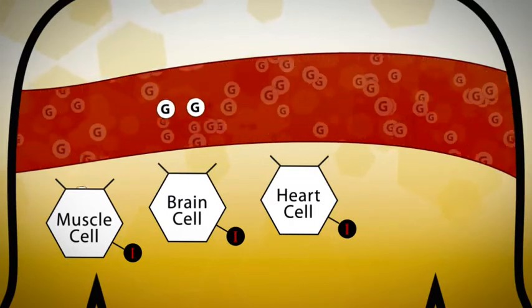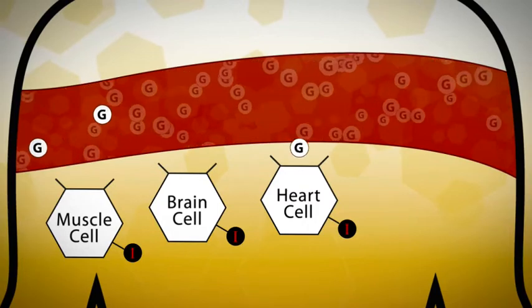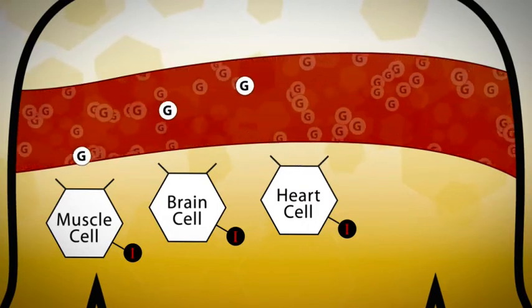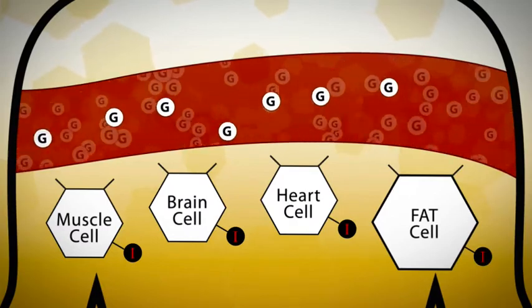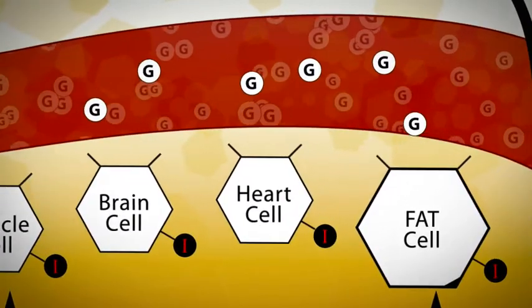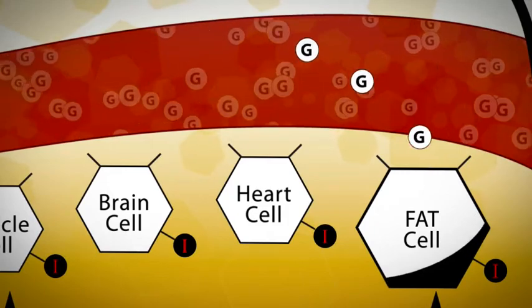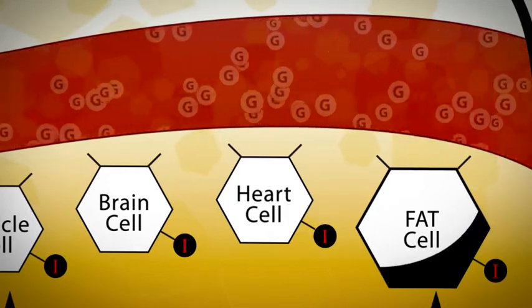What if we eat more than we need? Well, along with our brain cells and muscle cells, we also have fat cells. Our cells never eat more than they need, so when we have more glucose than our cells can use, the excess amount is stored in our fat cells, where it is converted into free fatty acids.